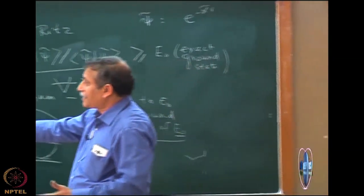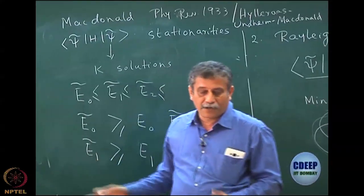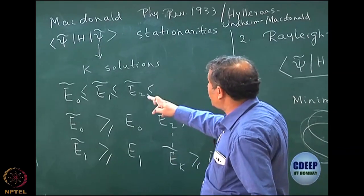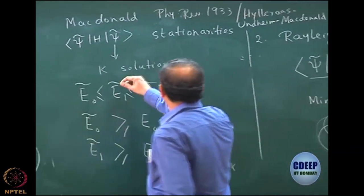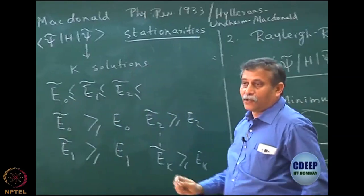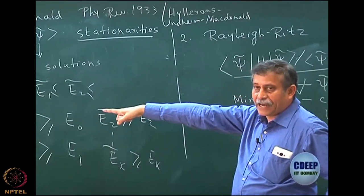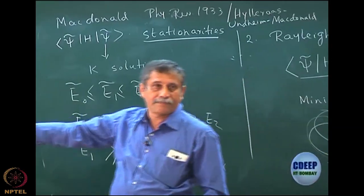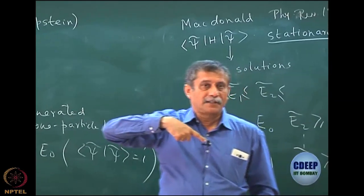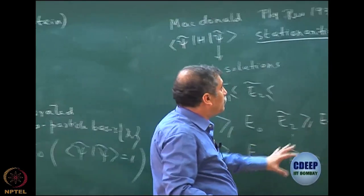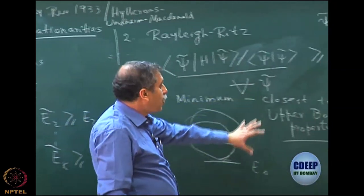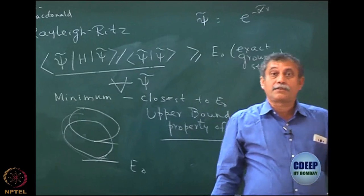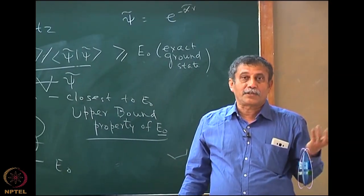Only after a stationarity, whatever I get must all be greater than or equal to its corresponding exact solutions. This is of course much more powerful than just the Rayleigh-Ritz statement, because the Rayleigh-Ritz statement only talks about being greater than or equal to E_0. It does not say which solutions will be greater than or equal to E_1 or E_2. So here I can get the solutions — I will show you how to get the k solutions, which is basically a matrix eigenvalue problem.